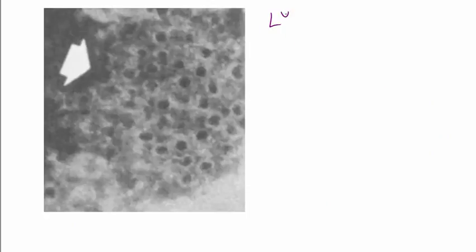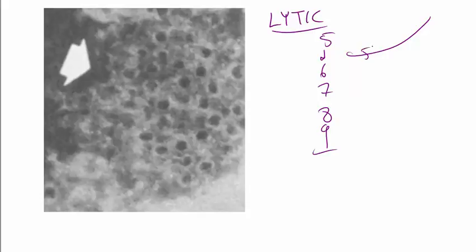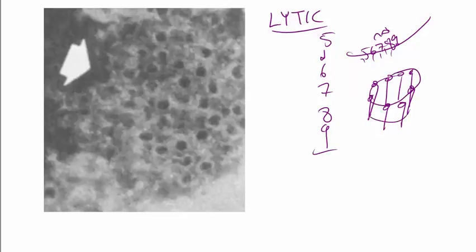Finally, the fourth property is lytic, and that depends on going all the way past five, two, six, seven, eight, nine. All of these are accumulating - five, six, seven, eight, nine are accumulating on the membrane. When nine is finally catalyzed by the previously activated components, it forms a transmembrane channel.